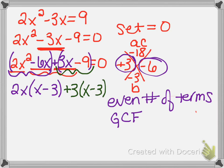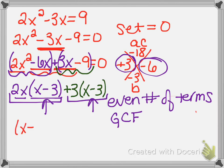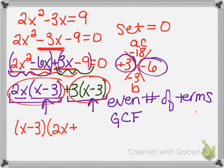Now I have two pieces: 2x is being multiplied to its parentheses as one term, and positive 3 is attached to its parentheses as the other. Those two chunks have something in common — they both have x minus 3 in them. So I take that x minus 3 and pull it out as my last GCF. When I remove it from the first chunk it leaves behind 2x, and when I remove it from the second chunk it leaves behind plus 3. The equation is now factored.